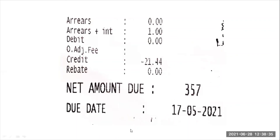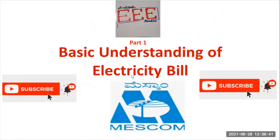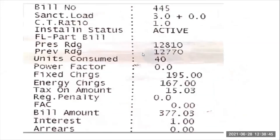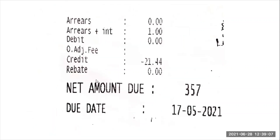These are the basic parameters you can understand from the electricity bill you receive. The major components to focus on are the fixed charge, energy charge, tax amount, and any extra interest or additional charges. The energy charge depends on how many units you consume, and this structure applies to domestic customers.